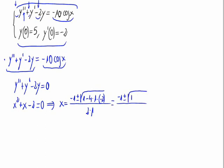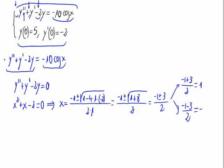This is equal to (-1 ± √9) / 2 = (-1 ± 3) / 2. The two solutions would be (-1 + 3)/2 = 1 and (-1 - 3)/2 = -2. From these roots, we have the solutions to the homogeneous part.